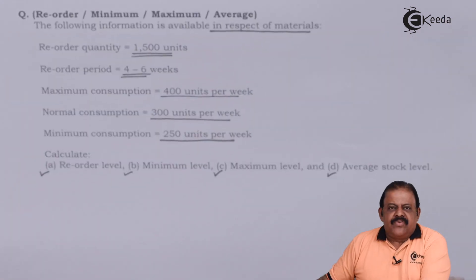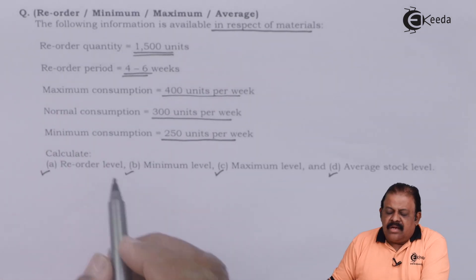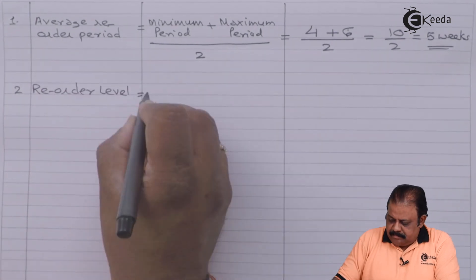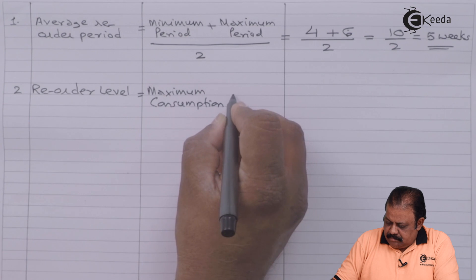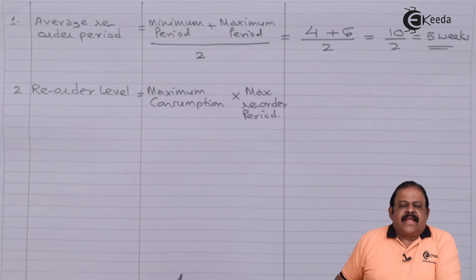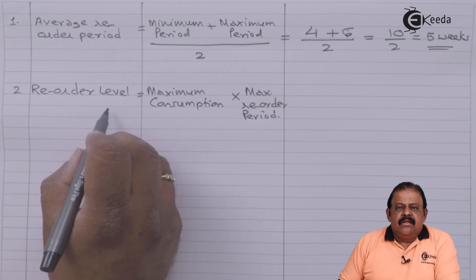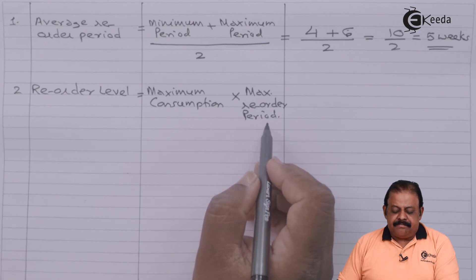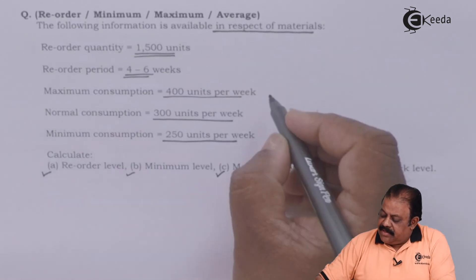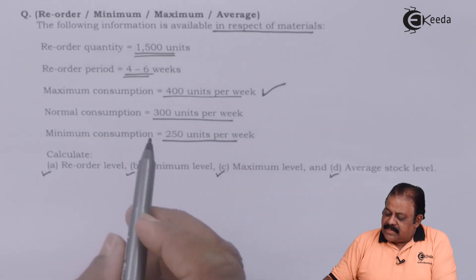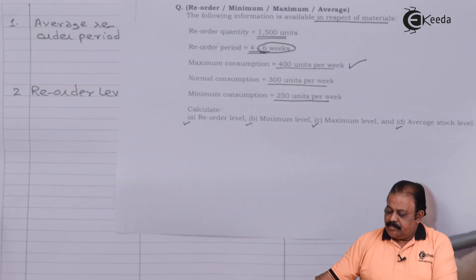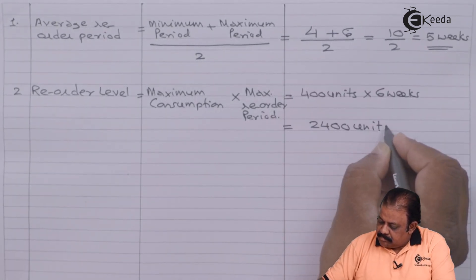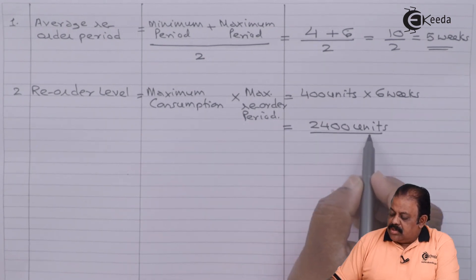Next, we are required to find out the reorder level. The formula for reorder level is maximum consumption multiplied by maximum reorder period. Maximum consumption is 400 units per week and maximum reorder period is six weeks. So reorder level equals 2400 units.